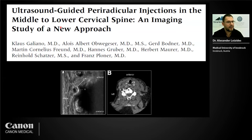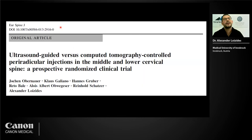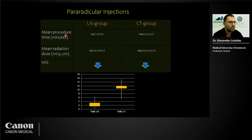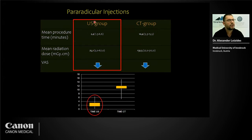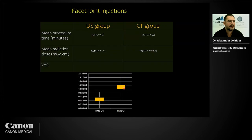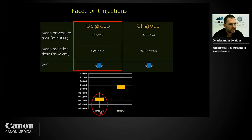We published the first study on ultrasound-guided peri-radicular injections in the cervical spine from our Innsbruck group. In a prospective randomized clinical trial comparing ultrasound and CT groups, both showed clear pain reduction, but sonography was significantly faster. Similar results were found for facet joint injections — again, sonography was faster.